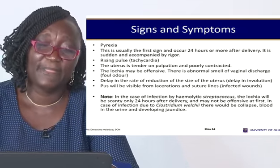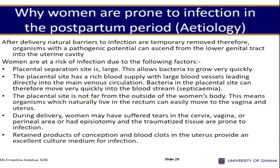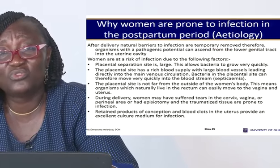Women are prone to postpartum infection because even normal delivery causes minimal bruising of genital tissues. Risk factors include: the placental separation site becomes a raw surface where bacteria can easily attack, and this site becomes closer to the outside of the body as the uterus involutes. During delivery, women may suffer vaginal tears, perineal tears, episiotomy, and other traumatized tissues, making them vulnerable to infection.